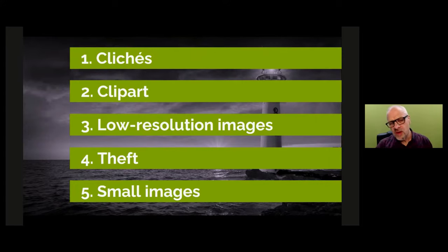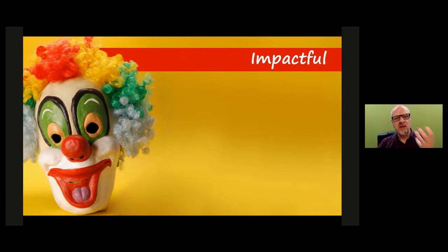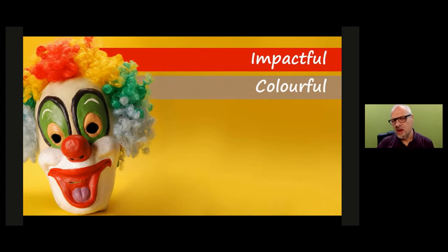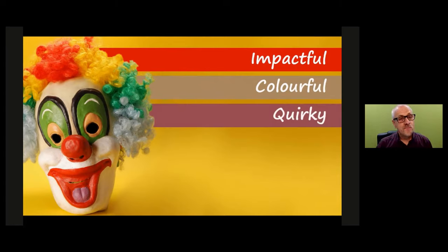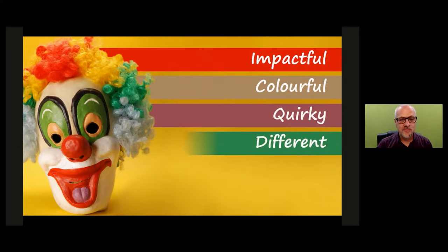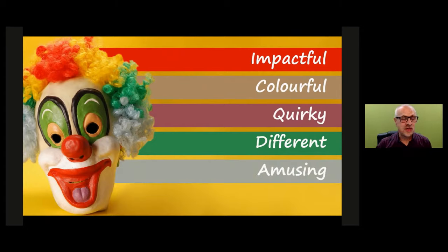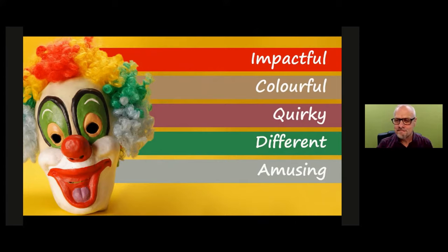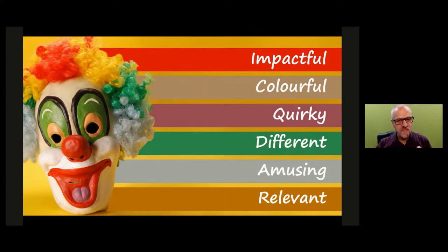So if those are the five things to avoid, what should we be aiming for? The first thing is that the image needs to be impactful — it needs to have an effect on your audience. Nothing wrong with monochrome images, but colour adds impact and memorability. It should be quirky and different — by which I mean not clichéd. If you can add a touch of humour, it makes them more memorable. But most importantly, it should be relevant — you can apply the RICE principle to images as well. Does the image reinforce, illustrate, clarify, or explain the point you're trying to make?